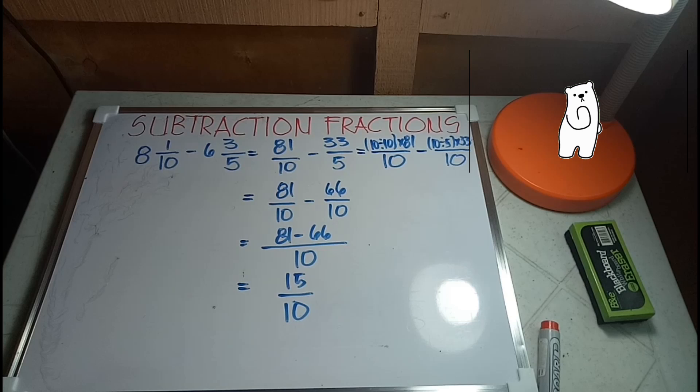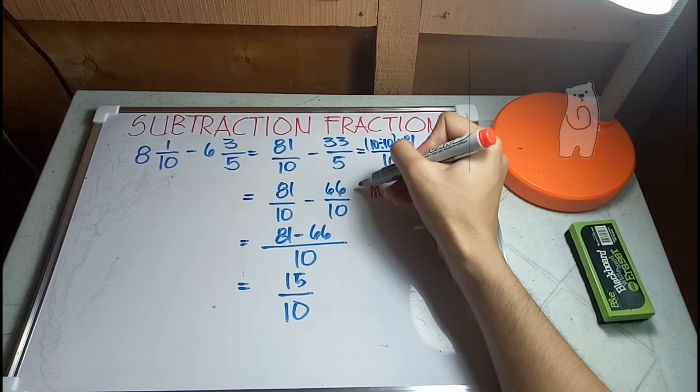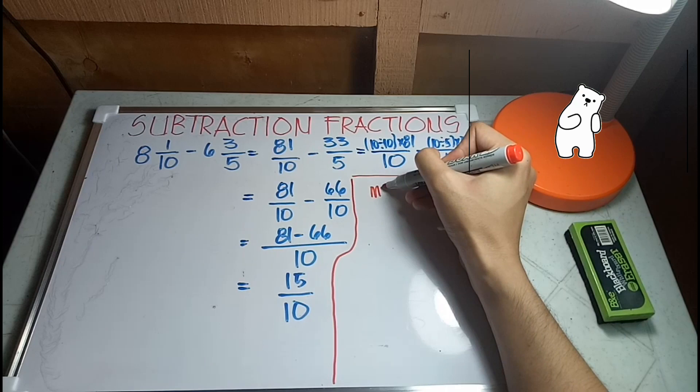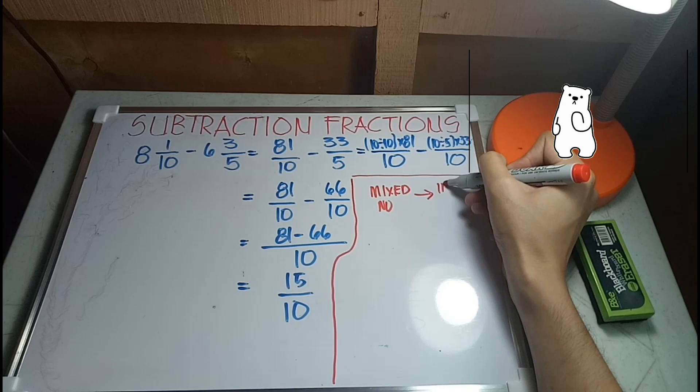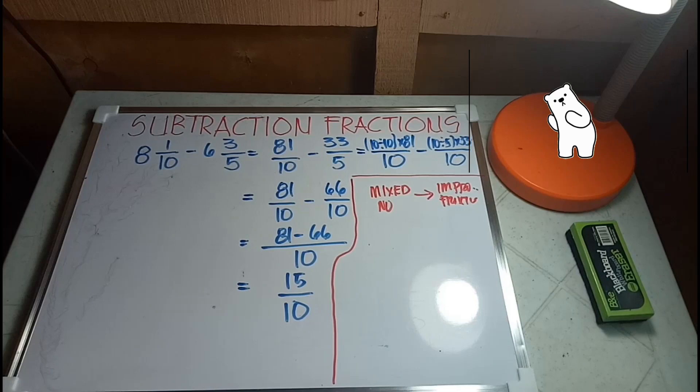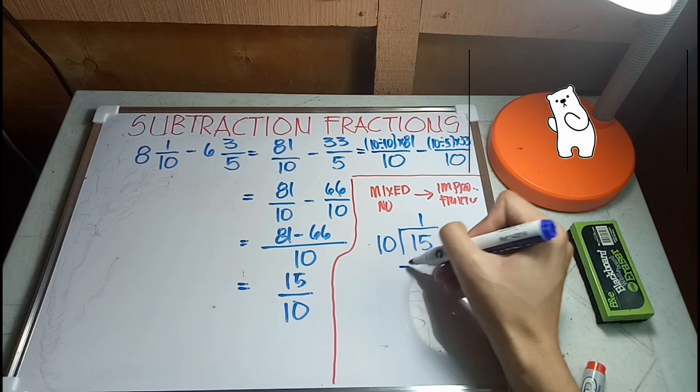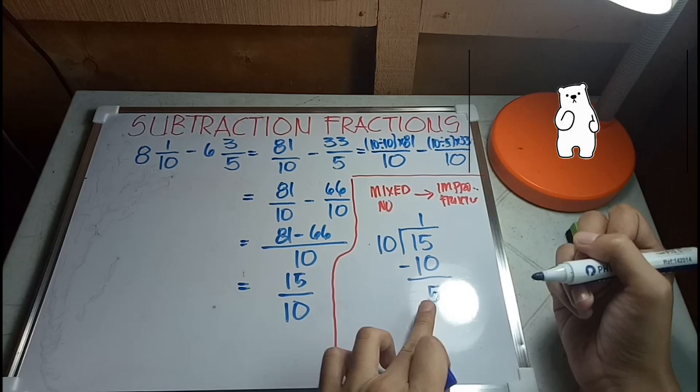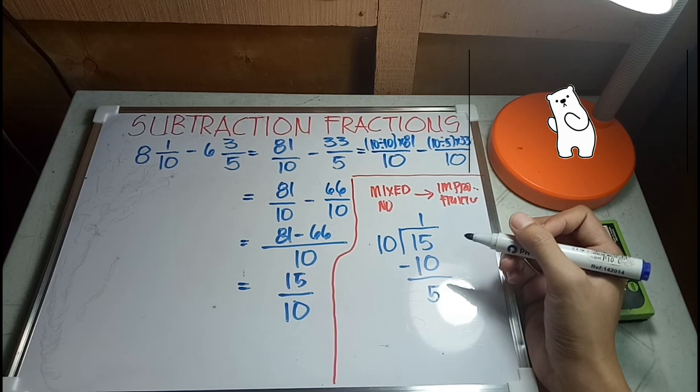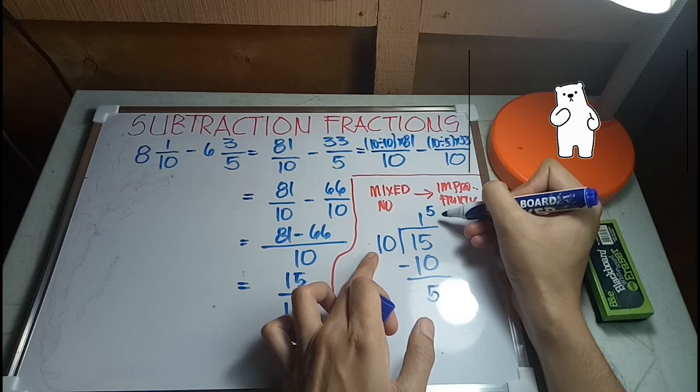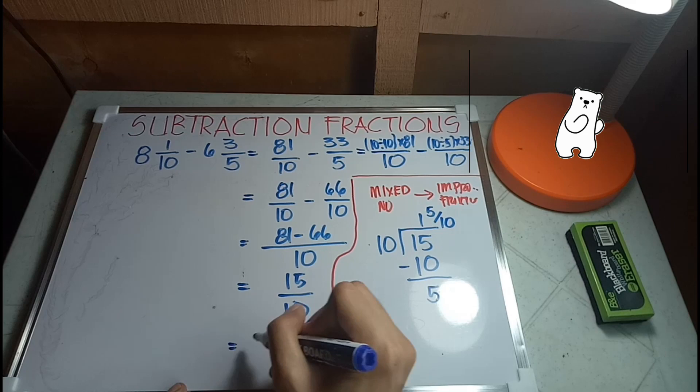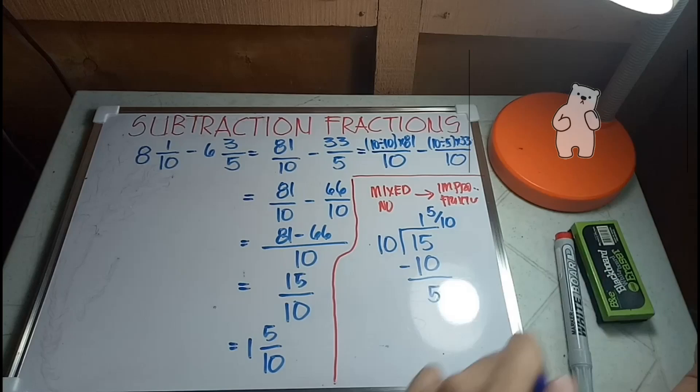50 over 10. As you can see this is an improper fraction, so I'll convert it to a mixed number. I'll divide 10 divided by 15. We have 1, 1 times 10 is 10, subtract it. This time we can't divide anymore, so we will be using this as our new numerator and this will be our numerator. So the answer would be 5, 1 over 5 over 10.